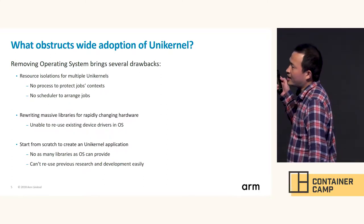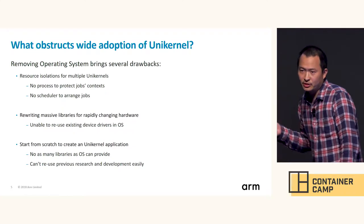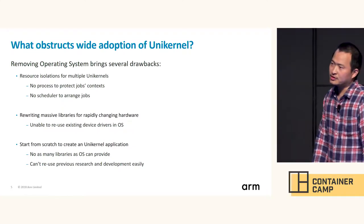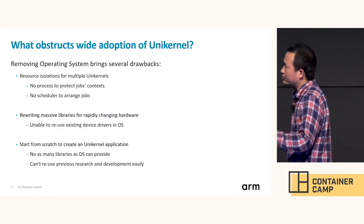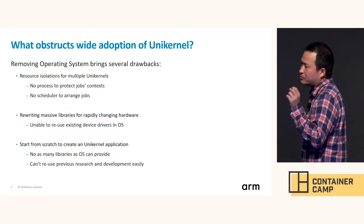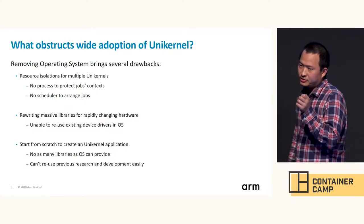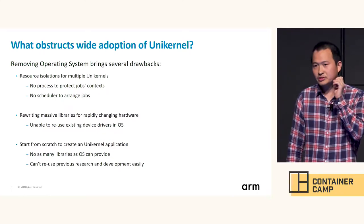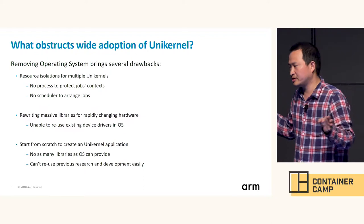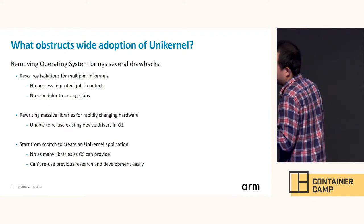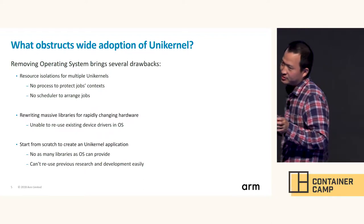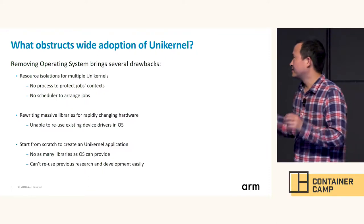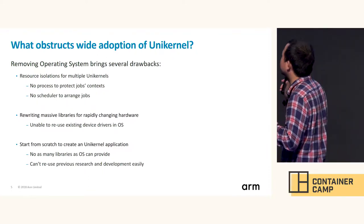The third drawback is that every time we want to create a UniKernel, we have to start from scratch. When you create a UniKernel application, you find that many libraries your application needs haven't been implemented in the UniKernel project. You have to implement them at the same time, so it's a huge task.